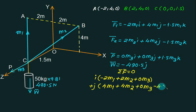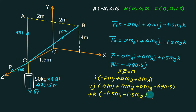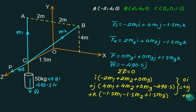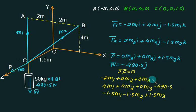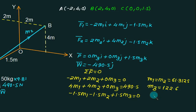Continuing with j terms: minus 4m3 minus 490.5, and the k term: minus 1.5m1 minus 1.5m2 plus 1.5m3. All terms equal zero. Comparing coefficients of i, j, k, we get three simultaneous equations. From the i equation: minus 2m1 plus 2m2 equals zero, showing m1 and m2 are identical values. Solving gives m3.